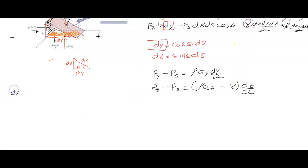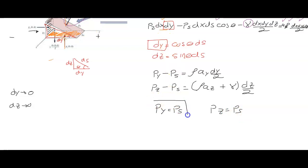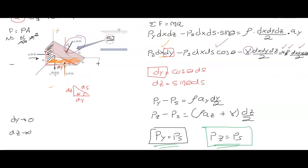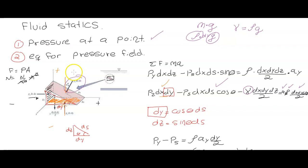Taking the limit as dy and dz go to zero for an infinitesimally small element, we get that py equals ps and pz equals ps. And if we do the force balance in the x-direction, we get px equals ps as well. The conclusion is that the pressure at a point in a fluid at rest is independent of direction — it depends only on the height of the fluid above it.